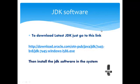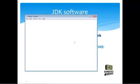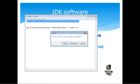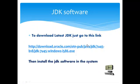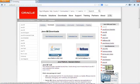To download the latest JDK, just go to the link, then download the JDK and install it into your system. Just click here — you can see the JDK platform, just click download.